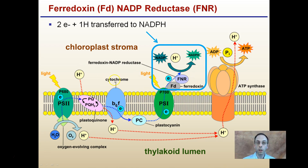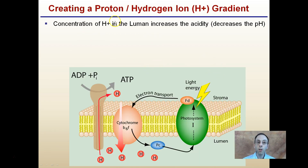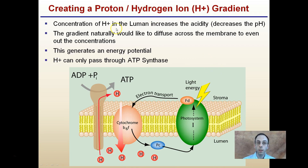Creating a proton and hydrogen ion gradient: the concentration of hydrogen ions in the lumen increases acidity — remember, increasing acidity decreases the pH. This gradient naturally wants to diffuse across the membrane to even out concentrations, which generates an energy potential. However, hydrogen ions can only pass through the protein structure called ATP synthase. We see our Cytochrome moving them across, and they're only allowed to pass back through the process of ATP synthase.